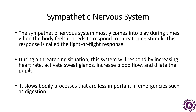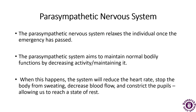The sympathetic nervous system mostly comes into play when the body responds to threatening stimuli. This part of the nervous system is also called the fight-or-flight response. Whenever there is a frightening situation, this system responds by increasing the heart rate, activating the sweat glands, increasing blood flow, and dilating the pupils. It also slows bodily processes that are less important in emergencies, such as digestion.